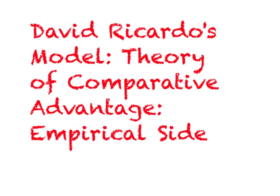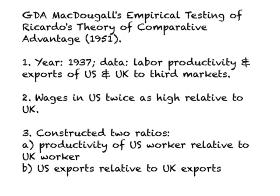Now let us look at David Ricardo's model or the theory of comparative advantage from the empirical side and look at some important issues. One of them being, does this theory explain real world phenomena correctly? And second, in this world, how can people play around and mess up comparative advantage? These two issues we will examine in this lecture video. Now let us look at empirical testing of Ricardo's model.